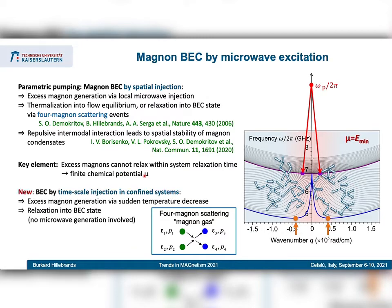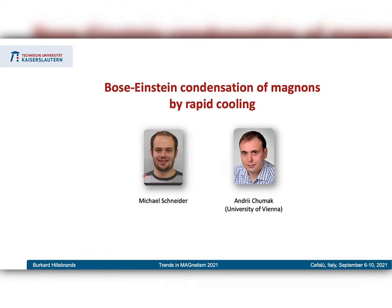We can also consider temporal injection in a confined system — for instance by changing the temperature of the system very rapidly, meaning on a timescale faster than the relaxation time. This work is particularly that of Michael Schneider, his PhD project supervised by André Chumak, who is now in Vienna.